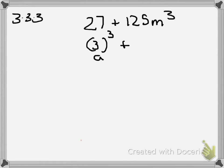And 125m cubed is the same thing as 5m times 5m times 5m, because 5 times 5 is 25 times 5 is 125, and m to the first times m to the first times m to the first. Remember when you're multiplying powers of the same base, you add the exponent, so 1 plus 1 plus 1 is 3.